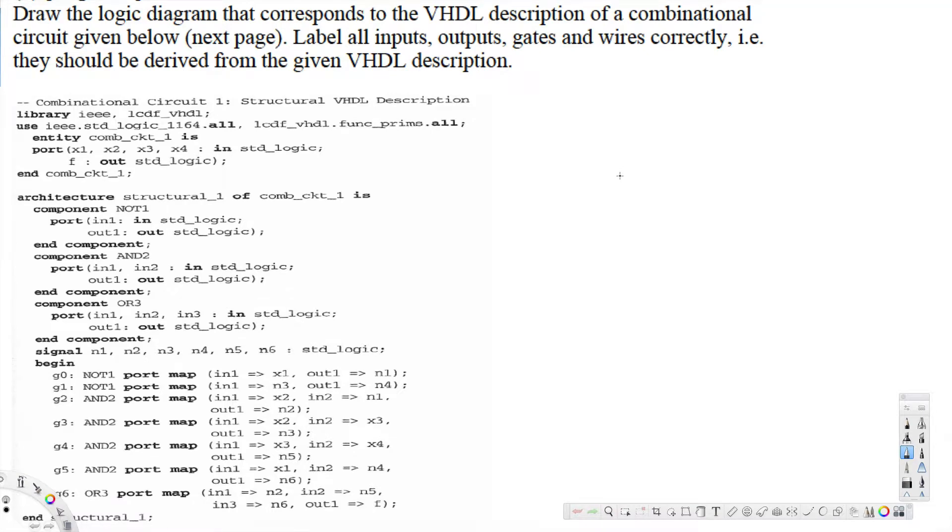What's going on guys, let's look at this problem right here. This question is asking to draw the logic diagram that corresponds to the VHDL description of a combinational circuit given below. Label all inputs, outputs, gates, and wires correctly. They should be derived from the given VHDL description.